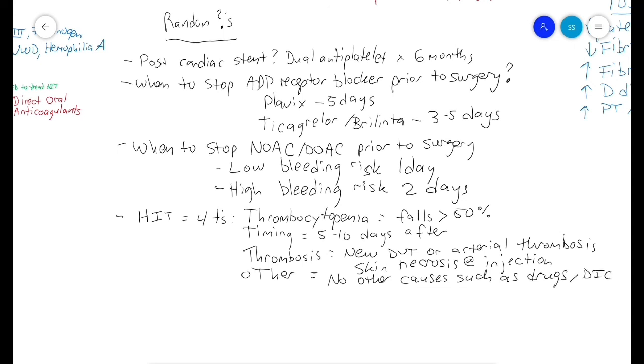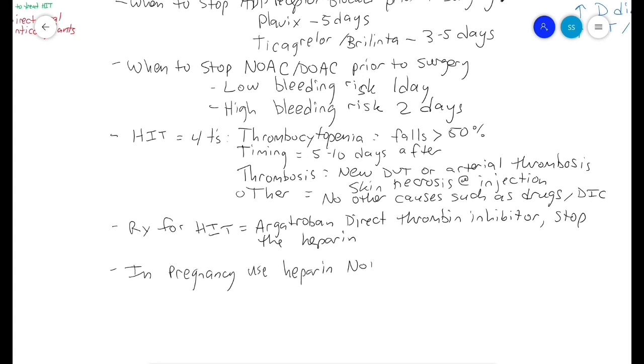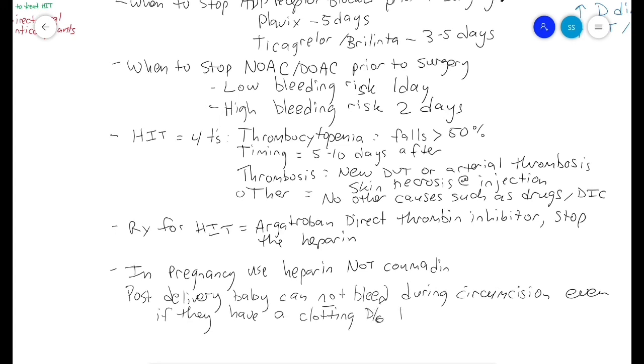Treatment for HIT is argatroban, which is a direct thrombin inhibitor, and obviously you need to stop the heparin. Lastly, remember that in pregnancy you should generally use heparin, not Coumadin. After delivery, a baby with an inherited clotting disorder may not bleed after circumcision because the coagulation factors from the mother are still in the baby's blood, so that does not necessarily rule out a clotting disorder.